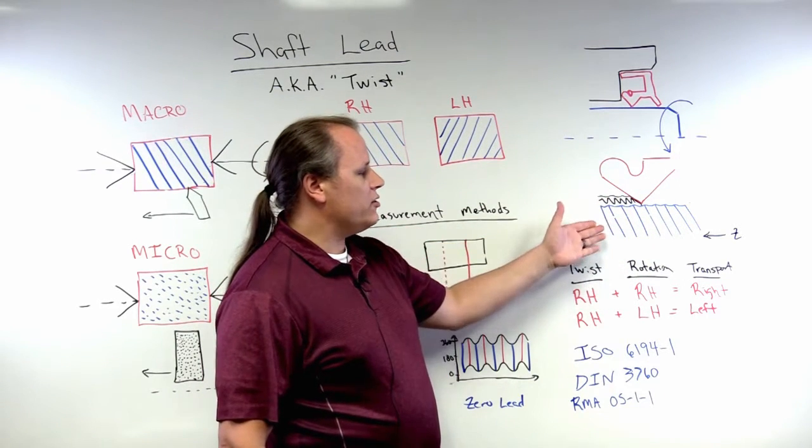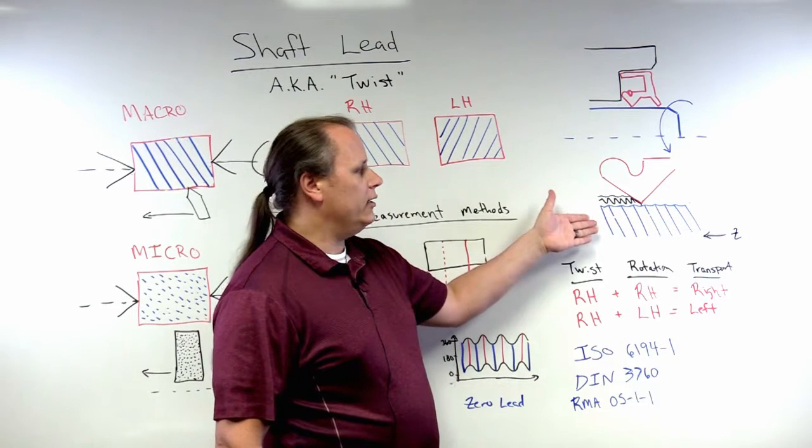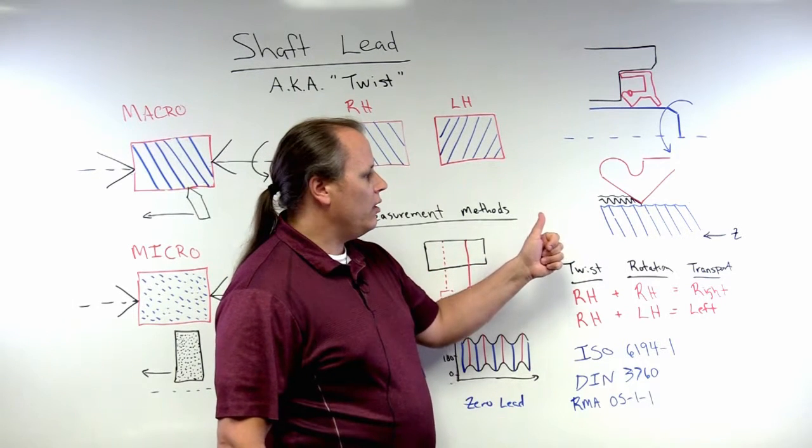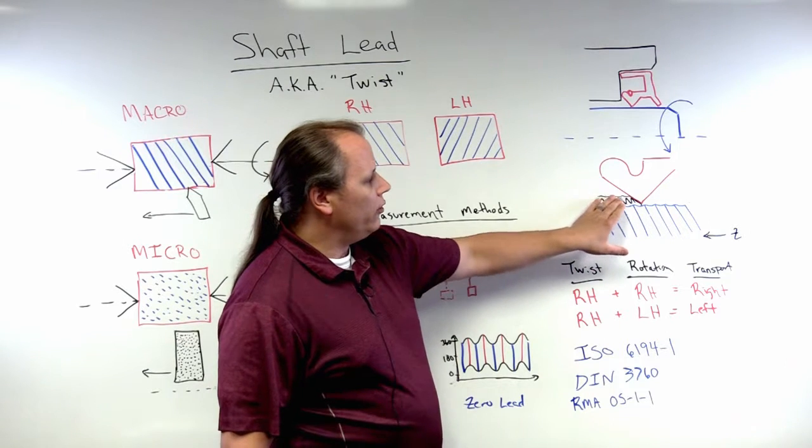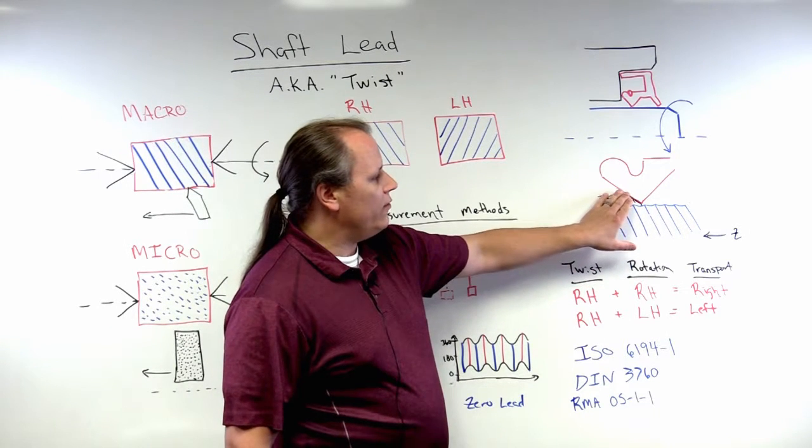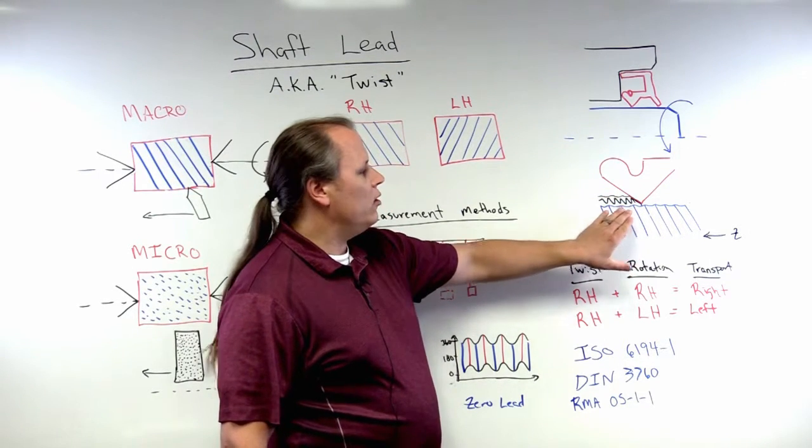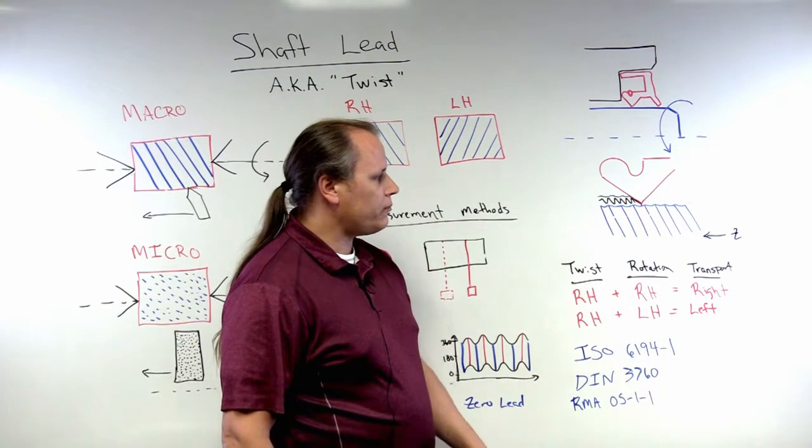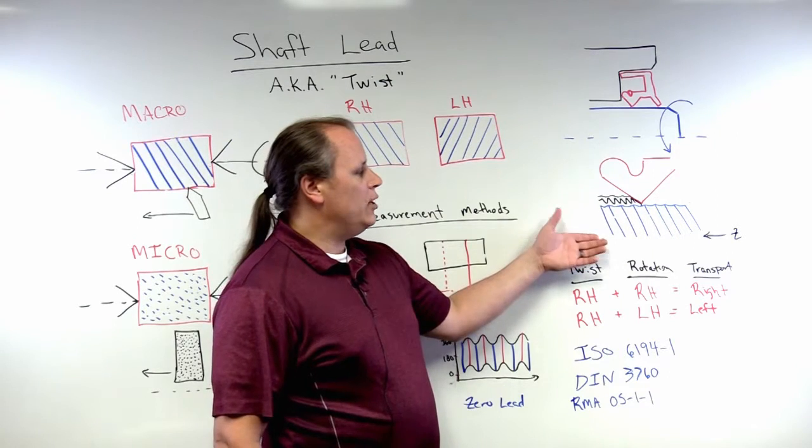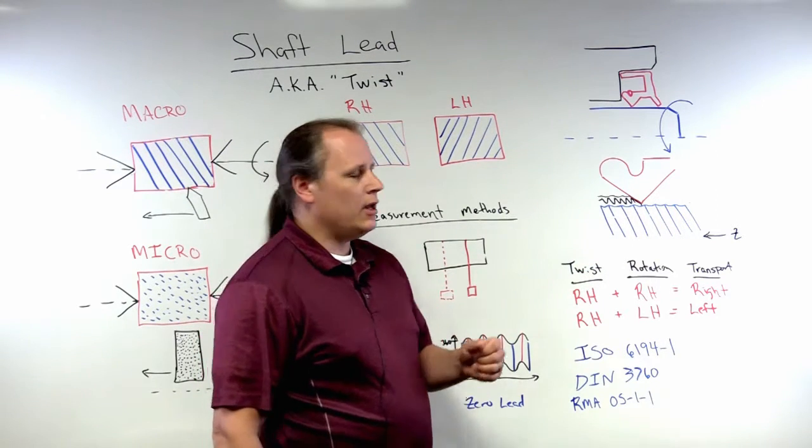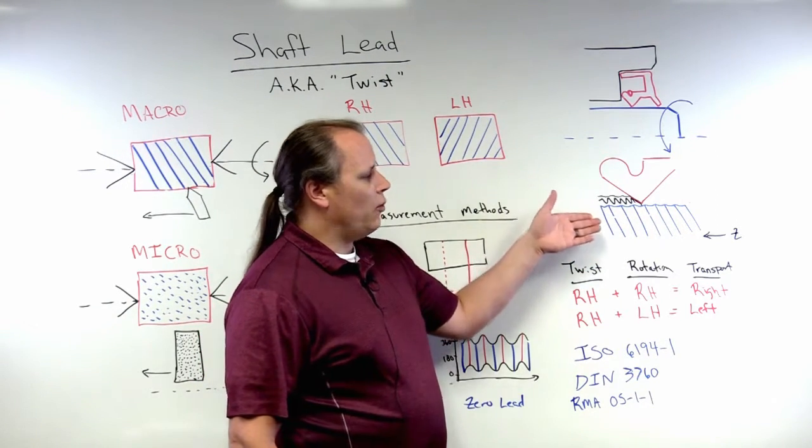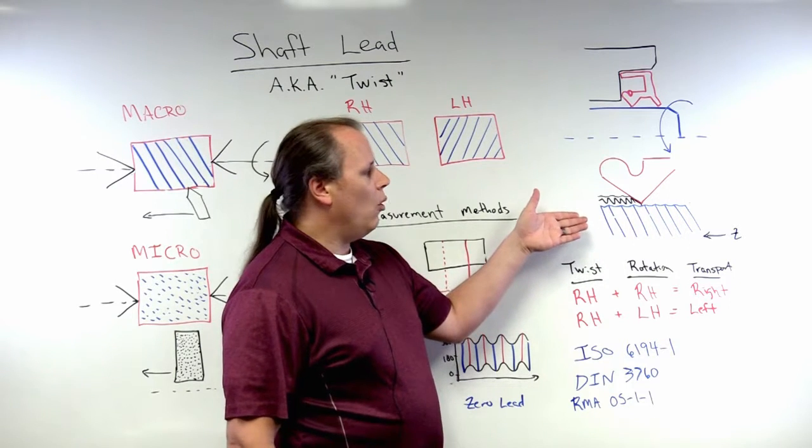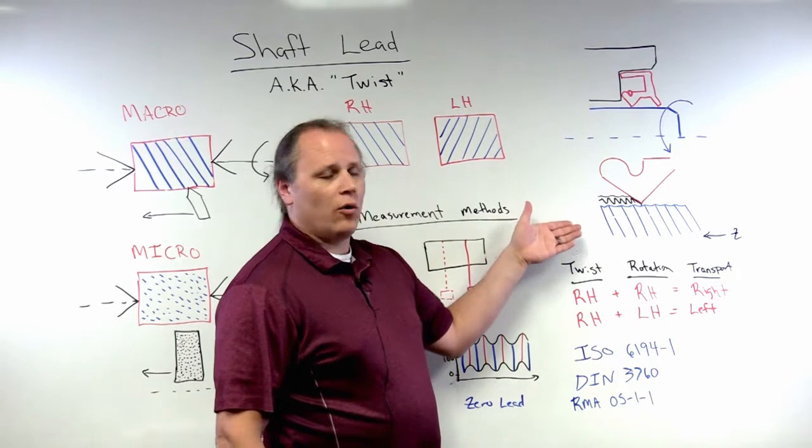and in this illustration I actually have drawn a right-hand lead type structure, we can see where the oil is in contact with the shaft surface and the sealing lip. As the shaft rotates, depending on the direction of rotation,